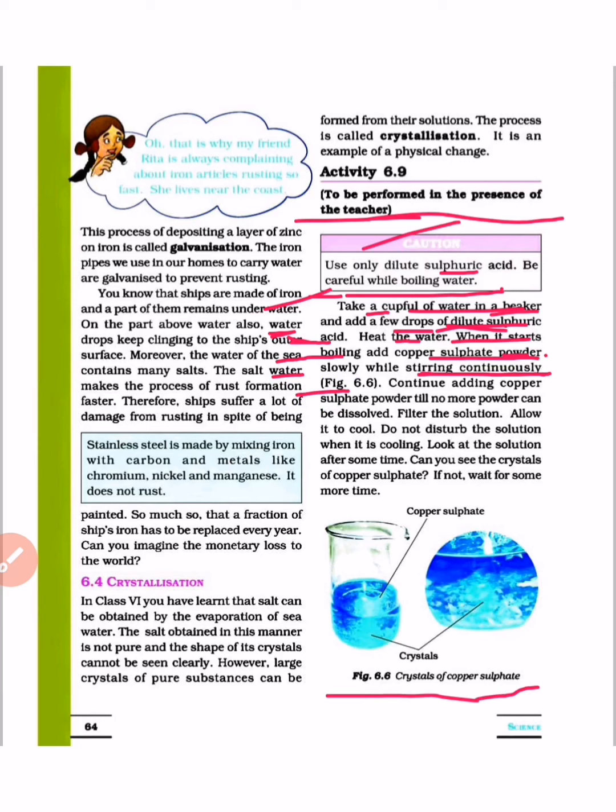Look at figure 6.6 crystals of copper sulfate. Continue adding copper sulfate powder till no more powder can be dissolved. Continue adding copper sulfate when no more powder will dissolve. After that, filter the solution. Allow it to cool.